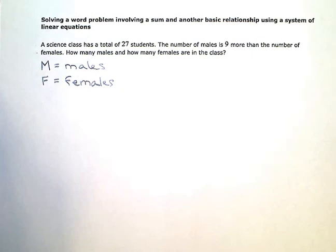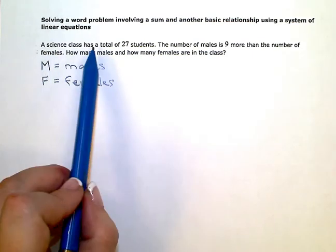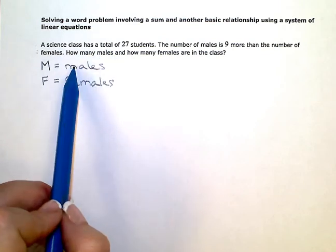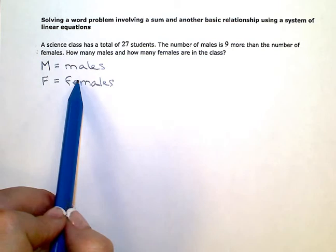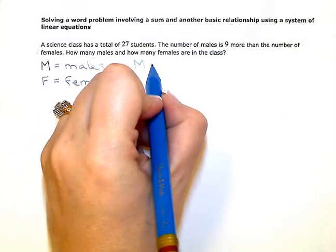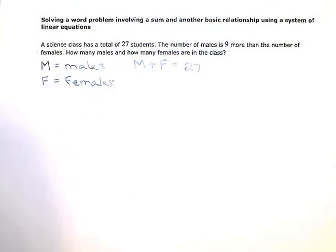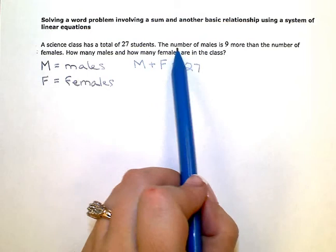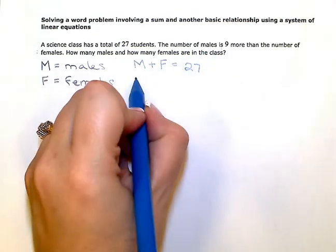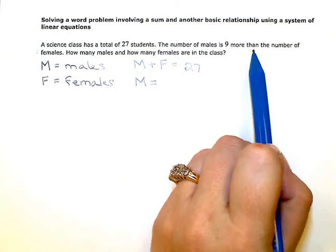I just need to write my system. I know that the class has a total of 27 students. That means males and females combined is equal to 27, so M plus F equals 27. Then I also know the number of males is nine more than the number of females, so M equals nine plus F.